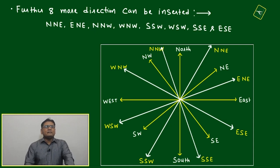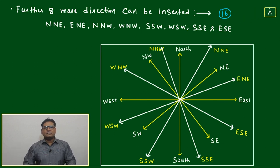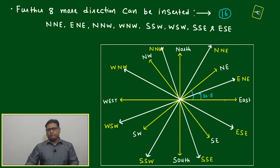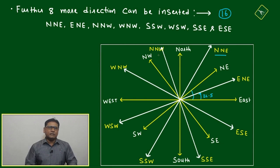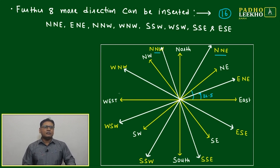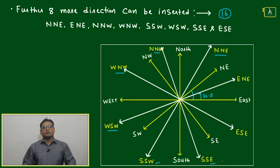This same system of 8 directions can be extended by inserting 8 more directions, giving a total 16-direction system. Each gap is bisected — for example, between east and north-east (which was 45°) now becomes 22.5°. This gives us east-north-east, north-north-east, north-north-west, west-north-west, west-south-west, south-south-west, south-south-east, and east-south-east — totaling 16 directions.